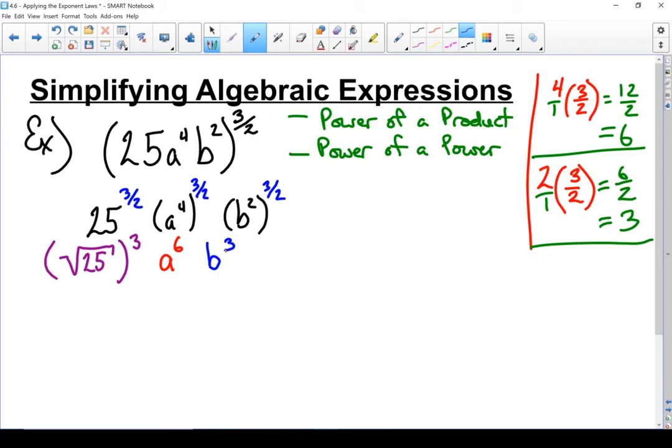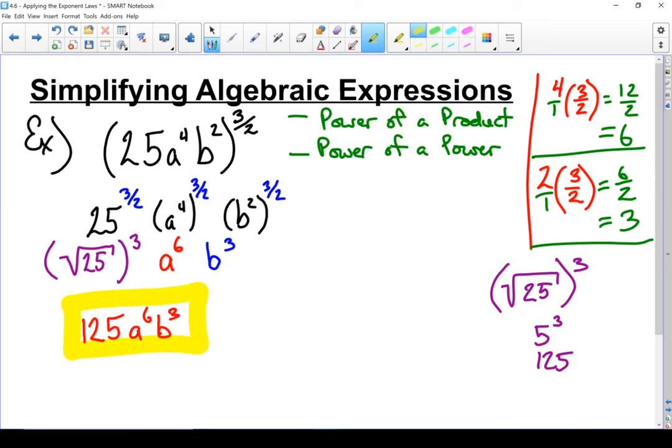All that's left is to evaluate the radical in the front. In fact, let's do that on the side here too. Square root of 25 is 5, and that's 5 cubed. 5 cubed gives me 125. Let's write that down. We have 125 times a to the power of 6 times b cubed. There is my simplified algebraic expression, and it's not nearly as messy as it was when it started.